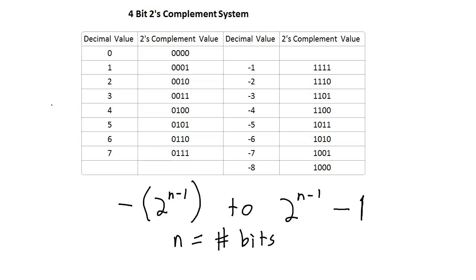One last note about this system: the term 2's complement can refer to the entire representation system — the 4-bit 2's complement system for representing signed binary numbers — but it can also refer to the 2's complement operation itself, where we flip all the bits and add 1 to determine the negative of a number. That operation is essentially multiplying by negative 1.